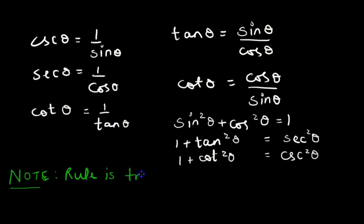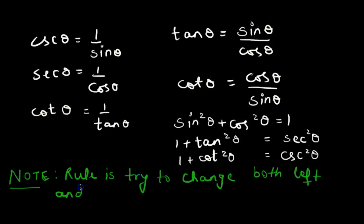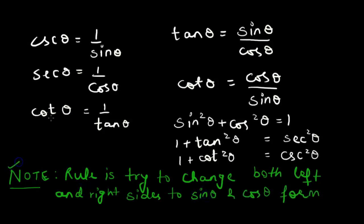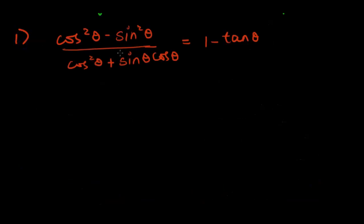The rule is to try to change both left and right sides to sine and cosine form. We'll use this note, plus all these formulas, plus the compound angle formulas and the double angle formulas to do some problems. Let's take up the first problem: prove that cos squared theta minus sine squared theta over cos squared theta plus sine theta cos theta equals one minus tan theta.